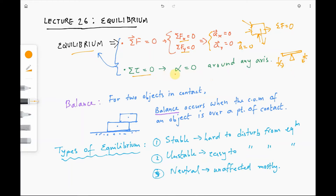Since there is no cause for any rotation, there is no angular acceleration around any axis. So in general, for equilibrium there is no net force on an object and there is no net torque that any force is causing, around any axis.